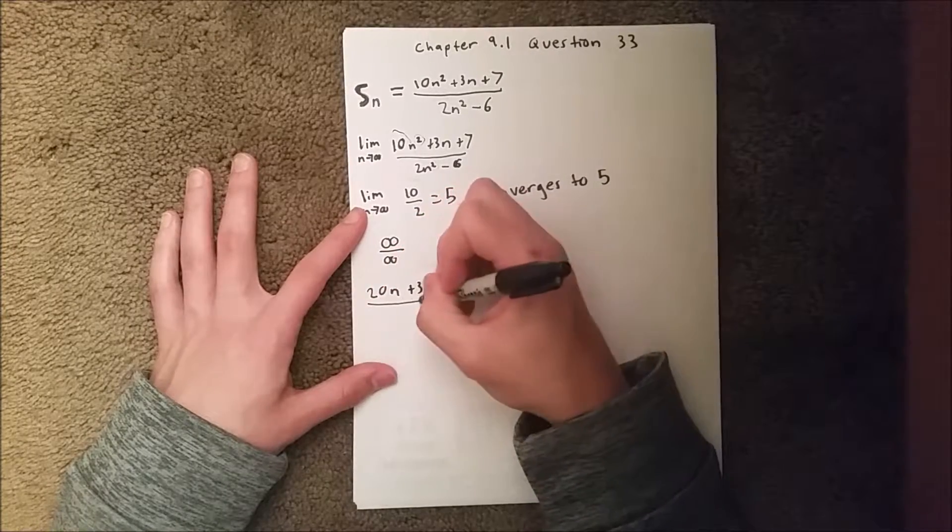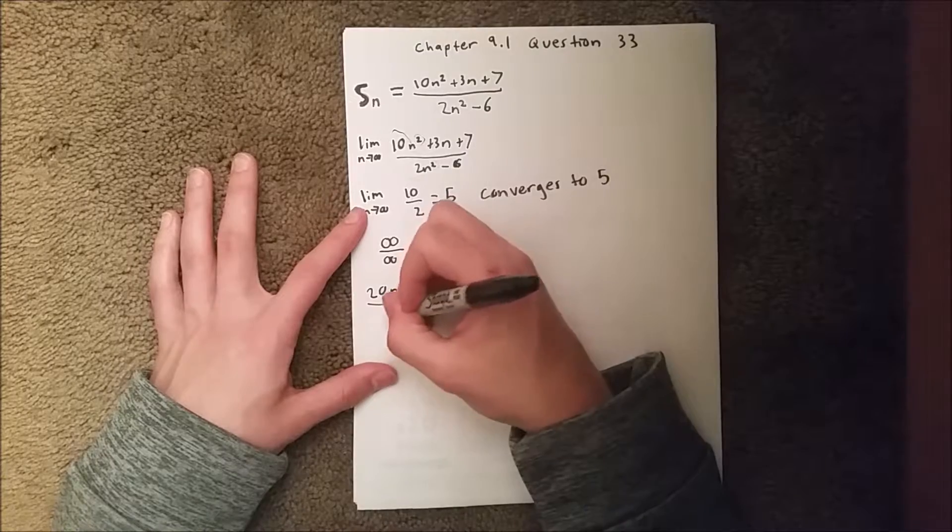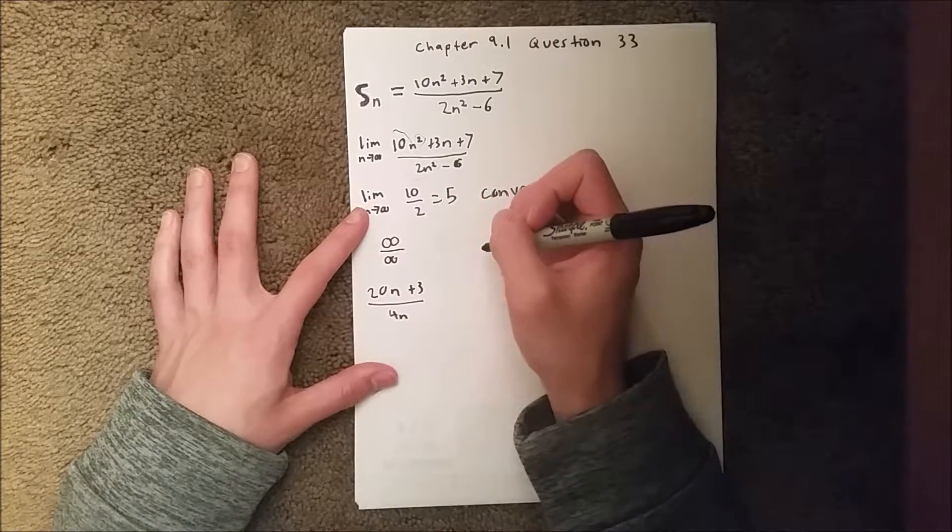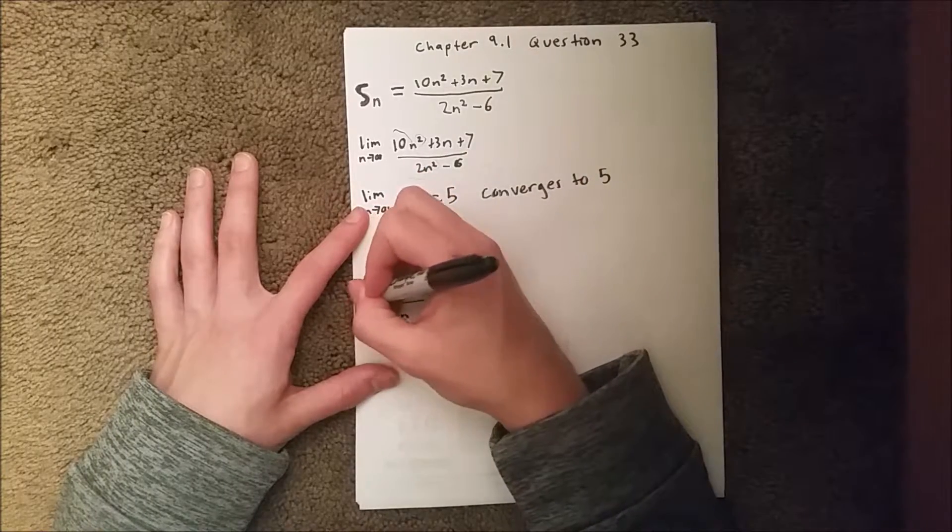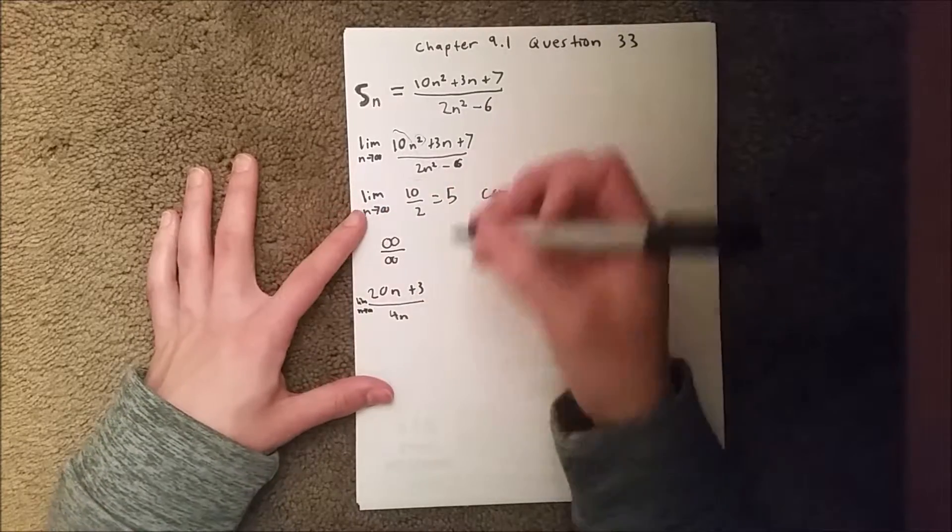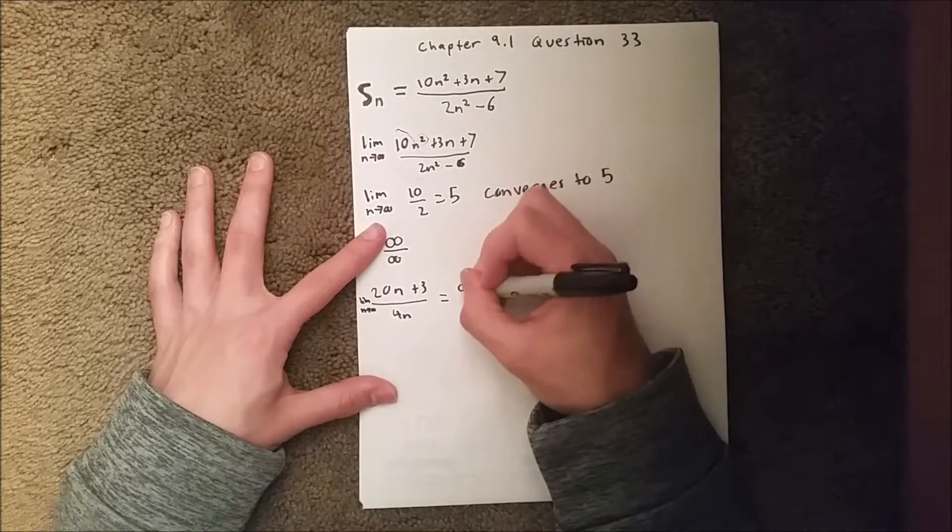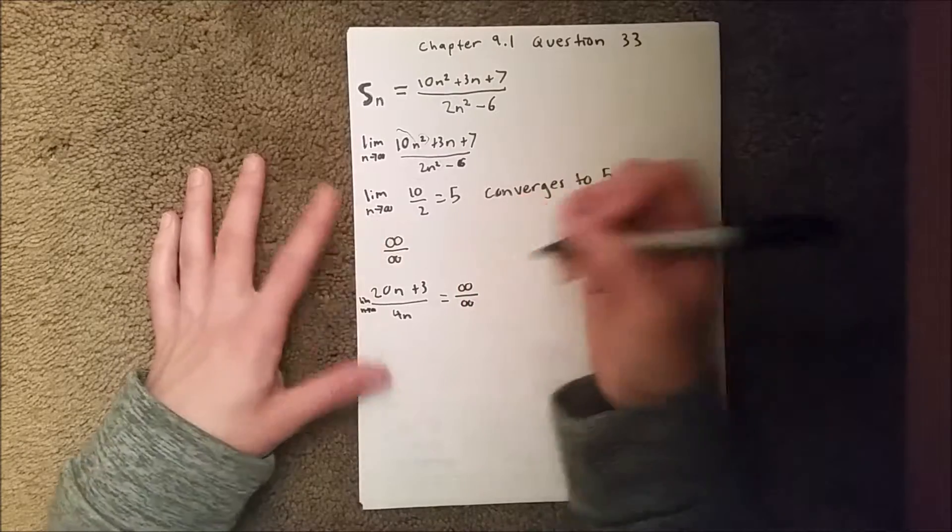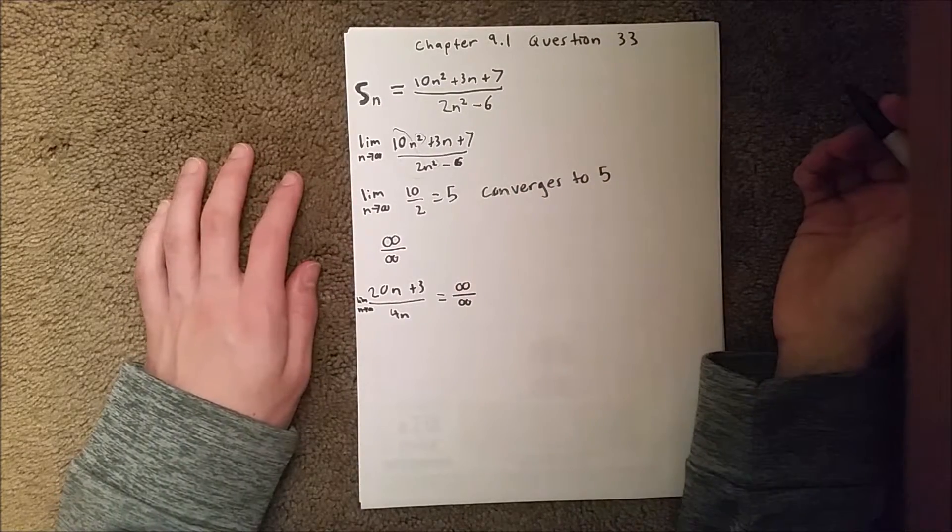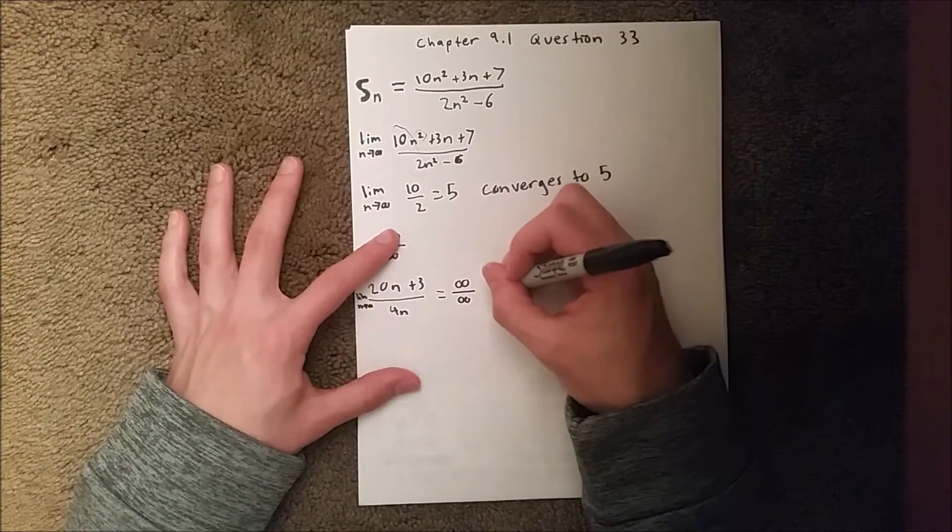And again you're going to take the limit as n goes to infinity of that, and again you will get infinity over infinity which again is an indeterminate form.